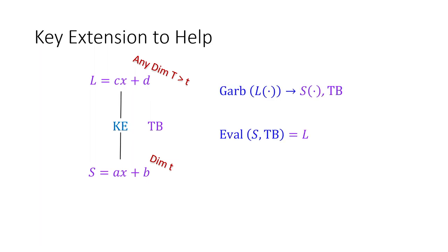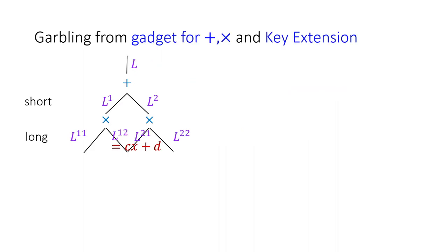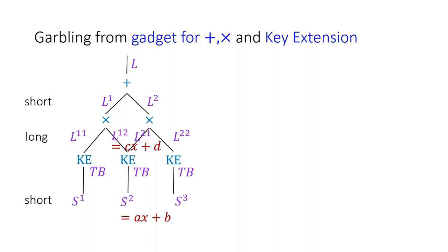In key extension, given a very long target label function L, the garbler can run this gadget to output a short label function S together with a garble table. The evaluator can use short label S to recover the much longer label L. Whenever the label dimension becomes too long, we attach a key extension gadget to bring the dimension back down to T, and then continue to garble a deep circuit.